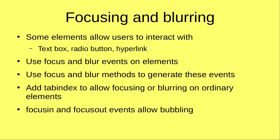Some elements allow users to interact with — for example, the text box, the radio button, the hyperlink, and so on. For those elements, we can use the focus and blur events. We can also use the focus and blur methods to generate the focusing and blurring events. We can also add tabindex to allow focusing or blurring on ordinary elements, so that elements that disallow focusing can be focused. Finally, we will talk about the focusin and focusout events, which allow bubbling, unlike the focus and blur events that disallow bubbling.